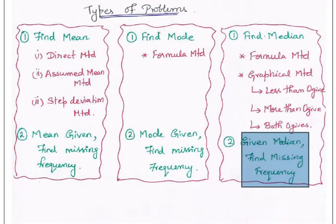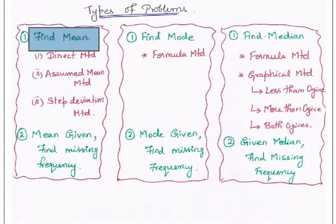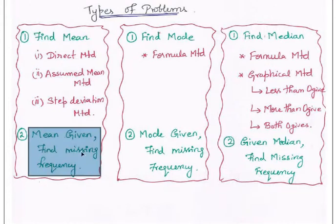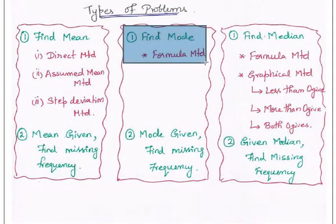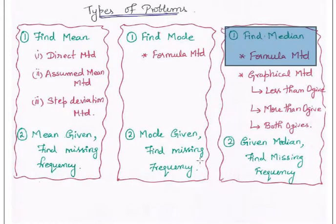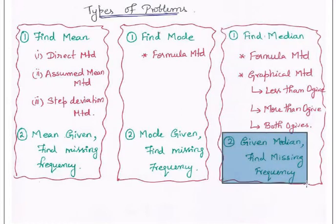In previous videos we had seen various types of problems for solving mean and mode. We had seen how to find a mean using all three methods, and also when mean is given, finding missing frequency — one or two missing frequencies. We had done problems finding mode using the formula method, and when mode is given finding the missing frequency. Today we are going to see finding the mean median using the formula method, and also when the median is given, finding the missing frequency.